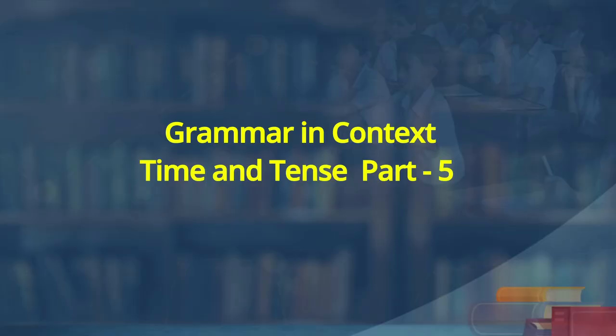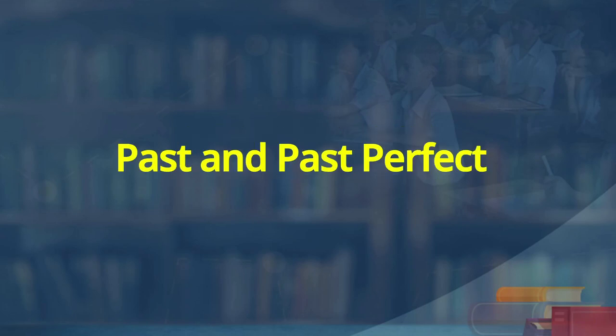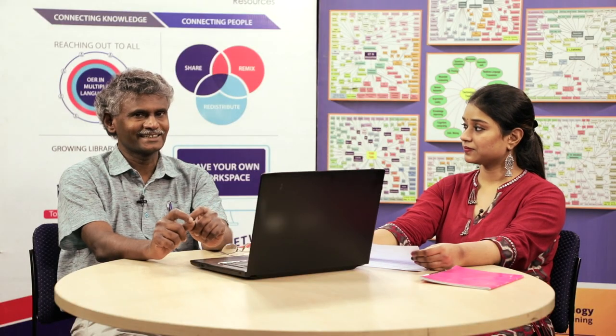Hello learners, welcome to the wonderful world of English language classroom. This is a grammar lesson again in the series Time and Tense, Grammar in Context. This is part 5 in the series. Today we will learn past and past perfect together. This lesson is meant for classes 6, 7, 8, or any of the classes, because we have Time and Tense in all these classes.